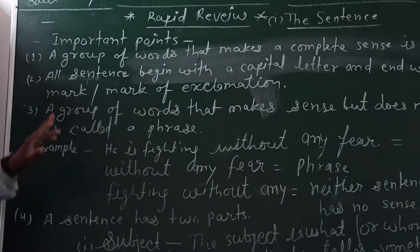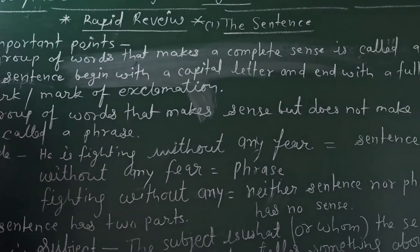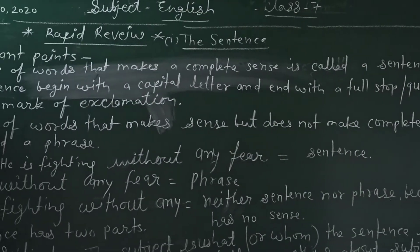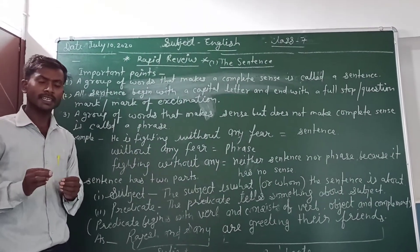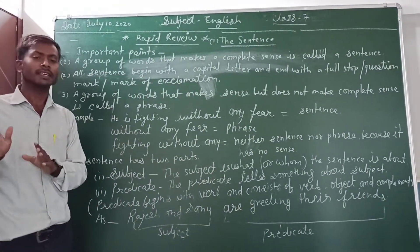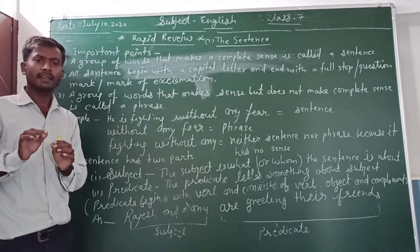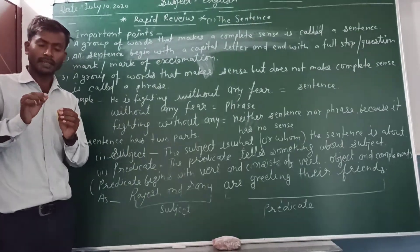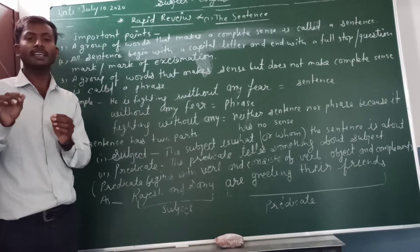First, a group of words that makes a combination is called a sentence. Dear students, you know very well what is a sentence. Sentence is a group of words that makes a combination. Just with this, this is a sentence.